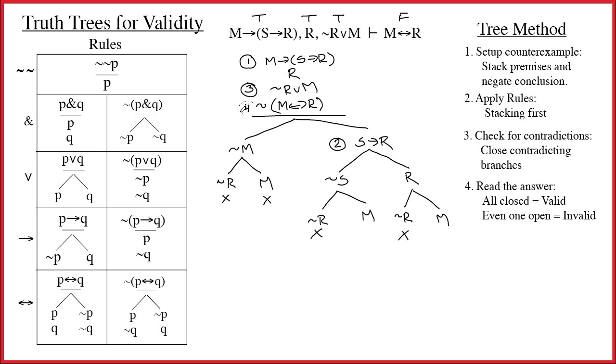Notice this is a negated double arrow. To make a double arrow false on the table, you have to have different values for the parts. So if you make P true, you make Q false, and vice versa. So that's what this is saying. Basically, take the components M and R and put them underneath both sides of the branch. On one side, negate the first one. On the other side, negate the other one. Same thing over here. Tilde M, R, M, tilde R.